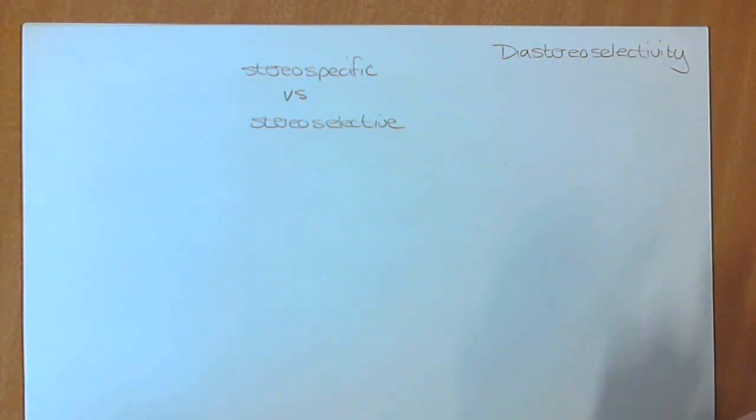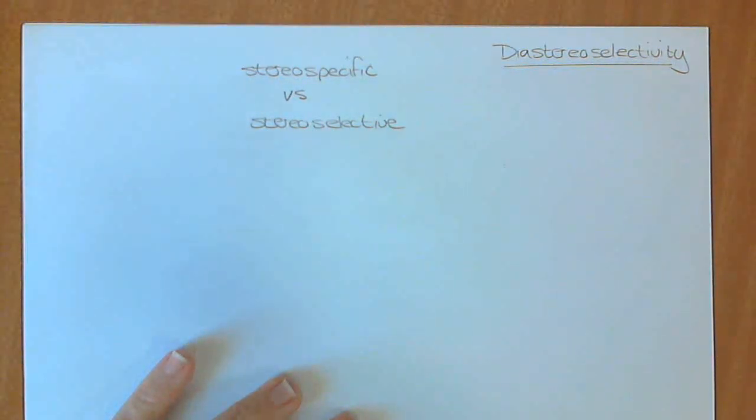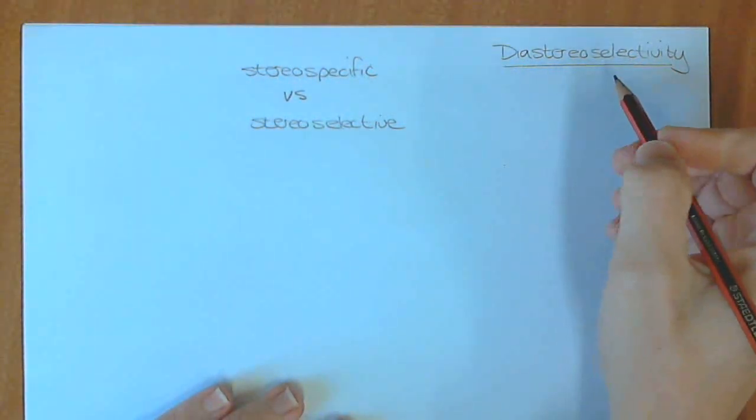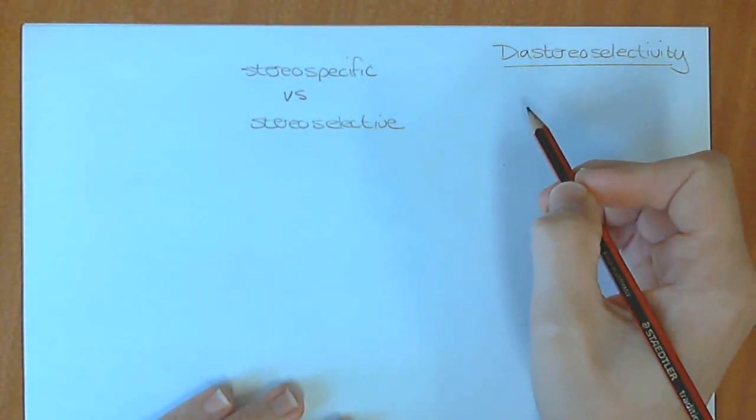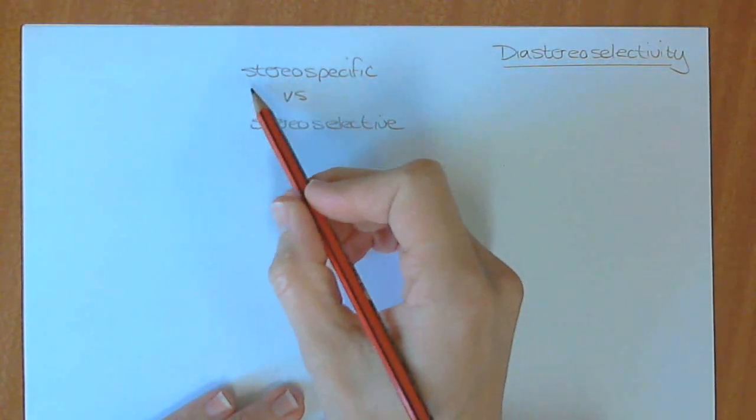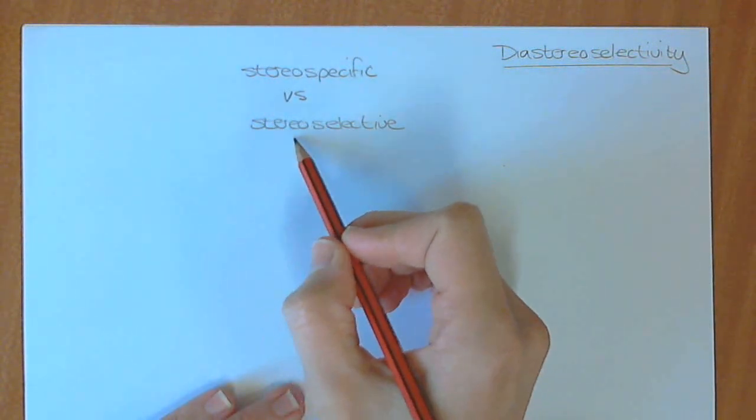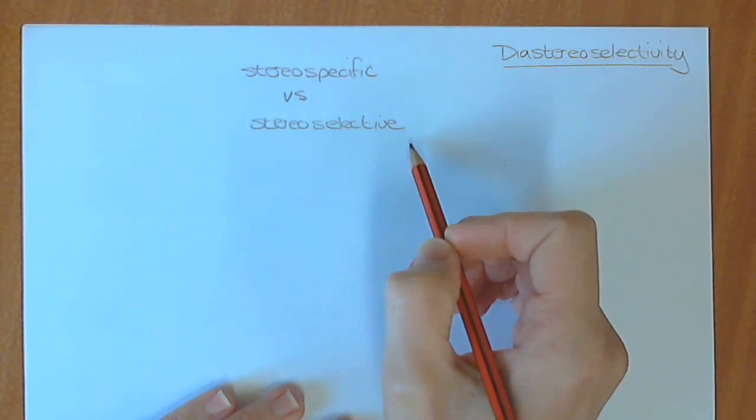All right, so we're now going to be going on to the chapter on diastereoselectivity. As by way of introduction to this, I want to just cover two important concepts: the idea of reactions that are stereospecific and reactions which are stereoselective.